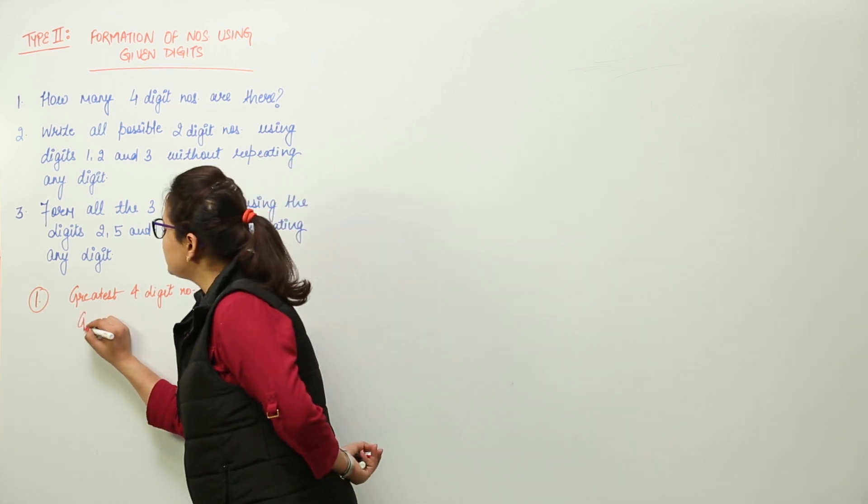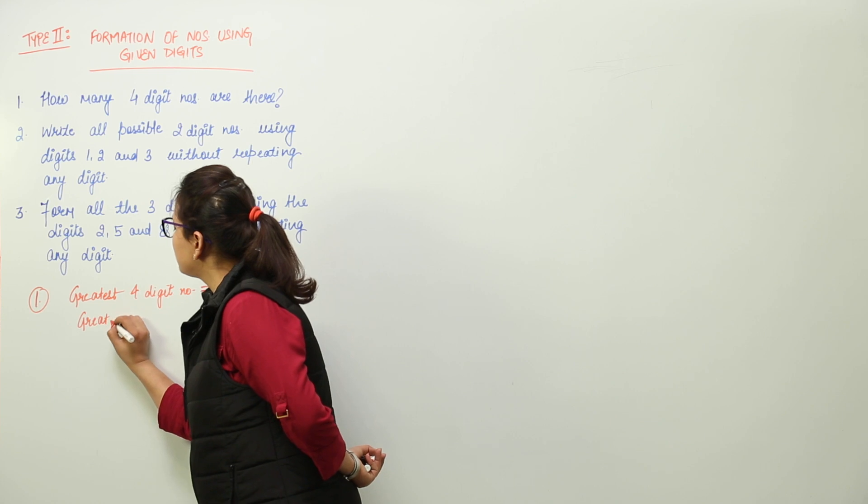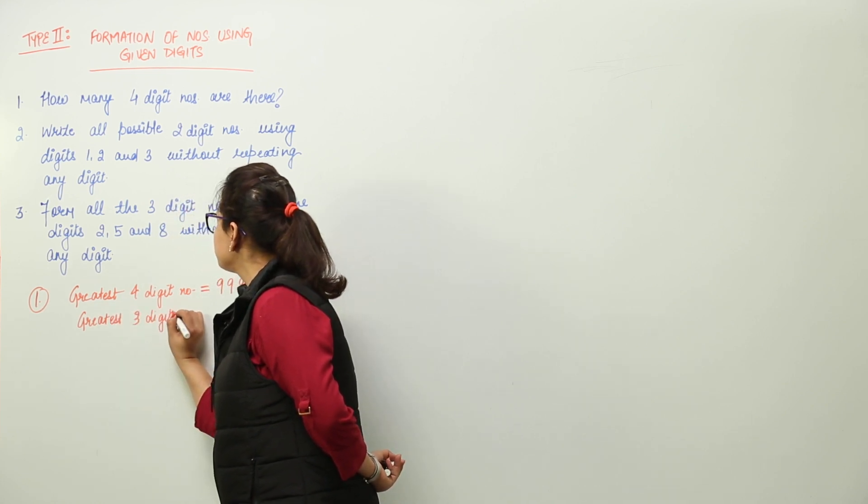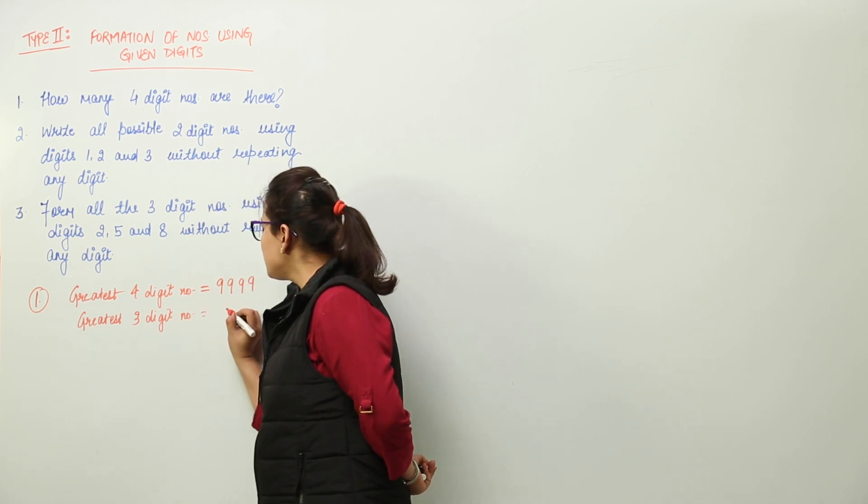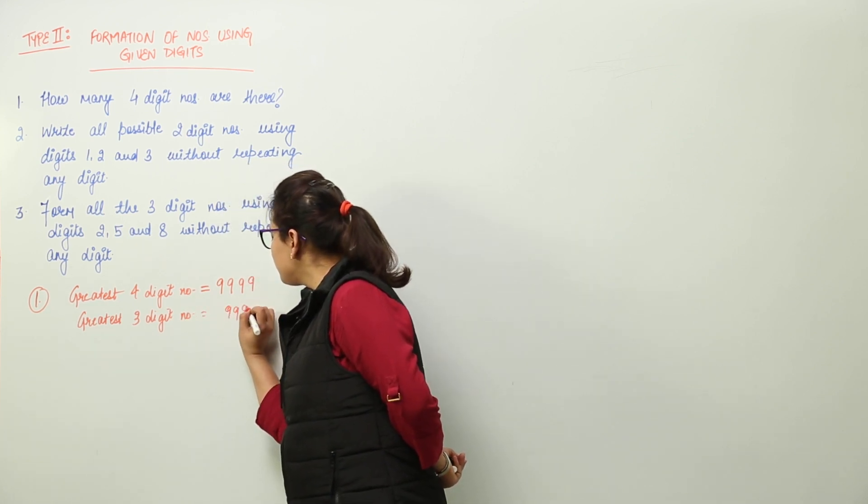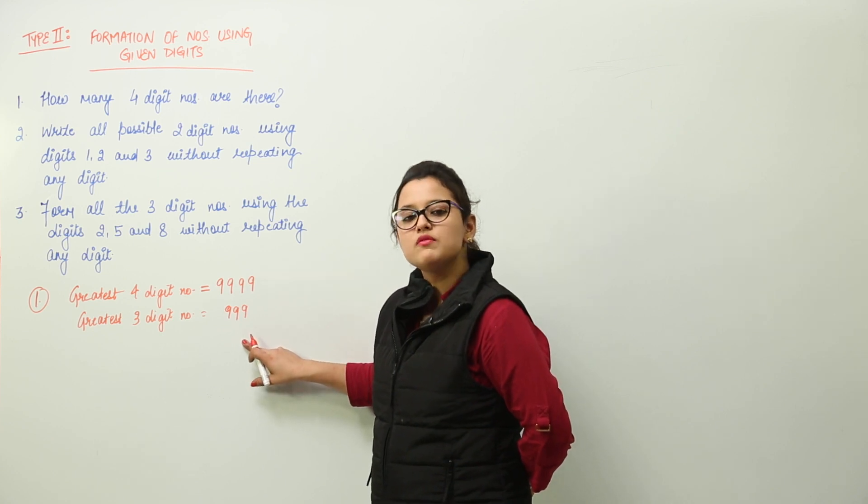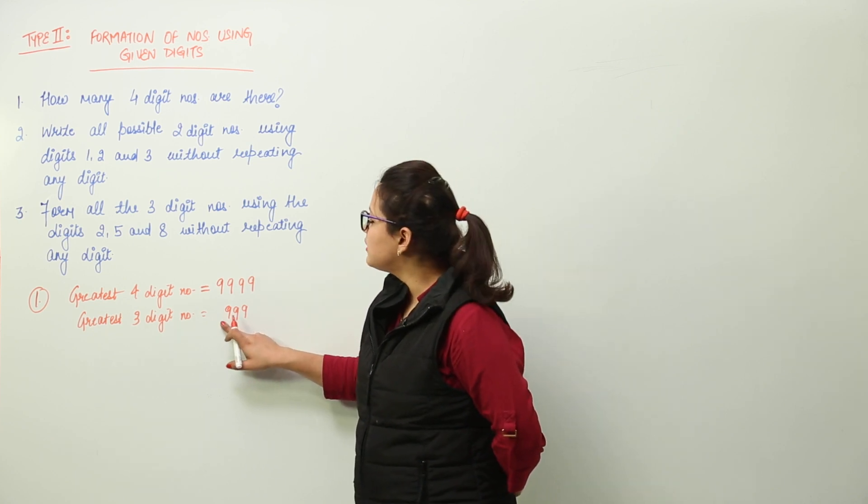Now write the greatest three-digit number. The greatest three-digit number is 999. Why? Because one number greater than this makes 1000, which is a four-digit number.